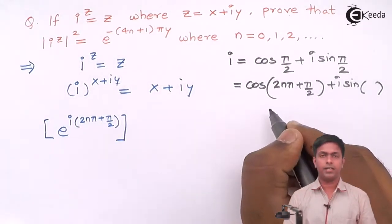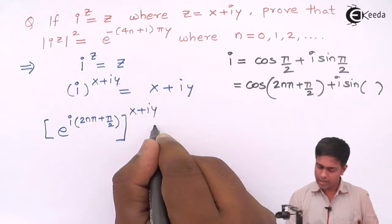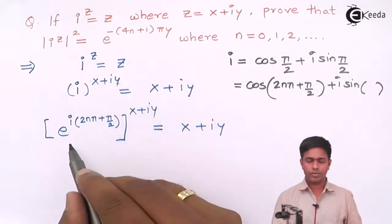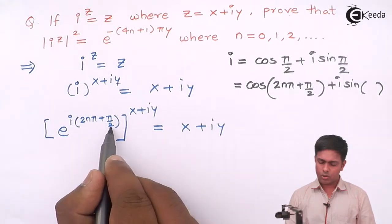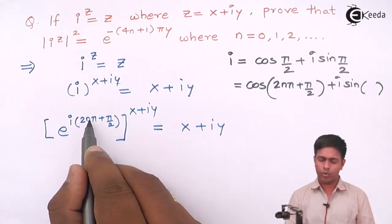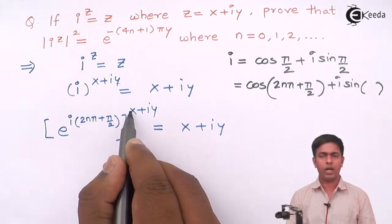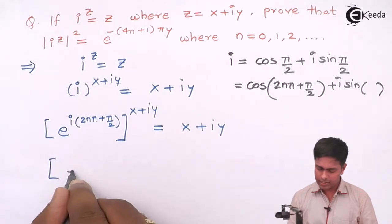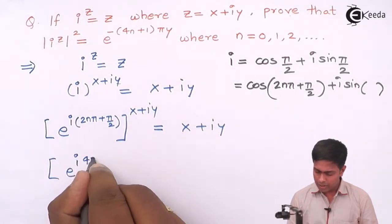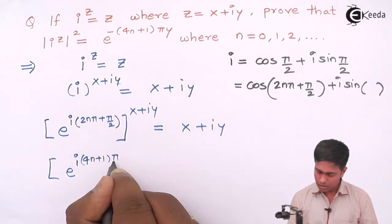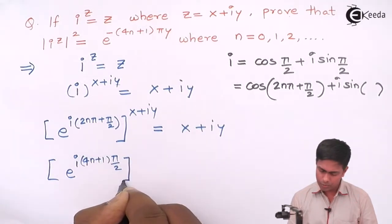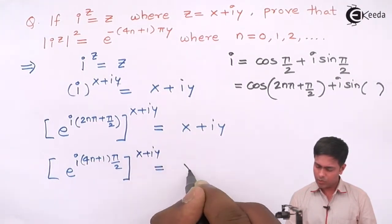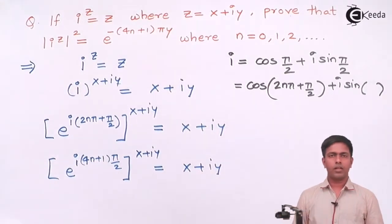Now let's simplify the exponent: 2 times 2nπ gives 4nπ, plus π/2. Taking π outside: (4n + 1)·π/2. So we have e raised to i·(4n+1)·π/2, all raised to x plus iy, equals x plus iy.